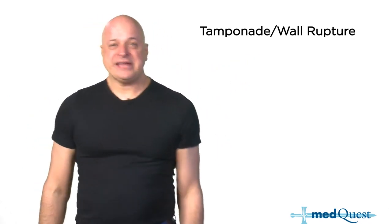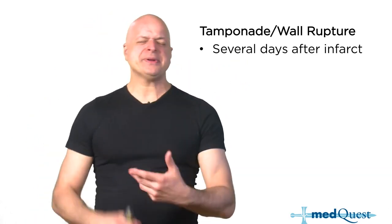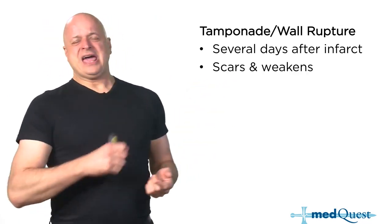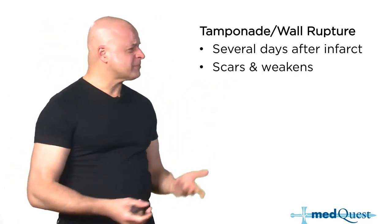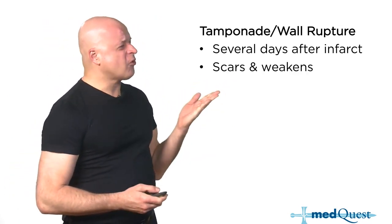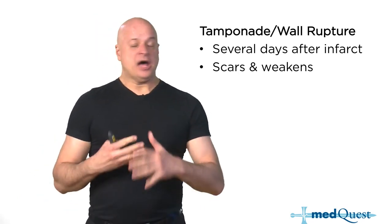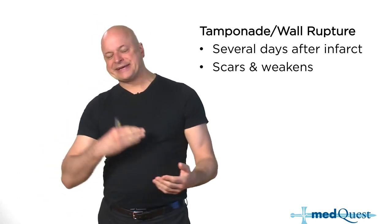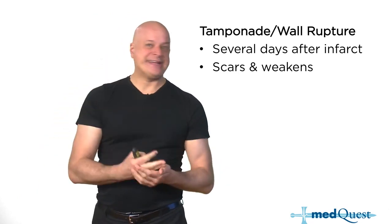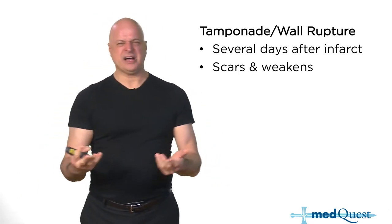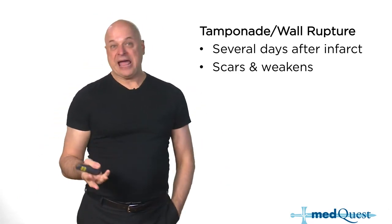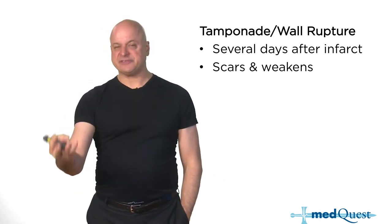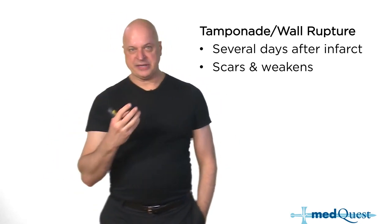Tamponade, wall rupture, septal rupture, and valve rupture are all actually much less common than they used to be — almost pre-thrombolytic, pre-angioplasty types of illness. They can happen but basically occur in extremely severe MIs and much less commonly now.